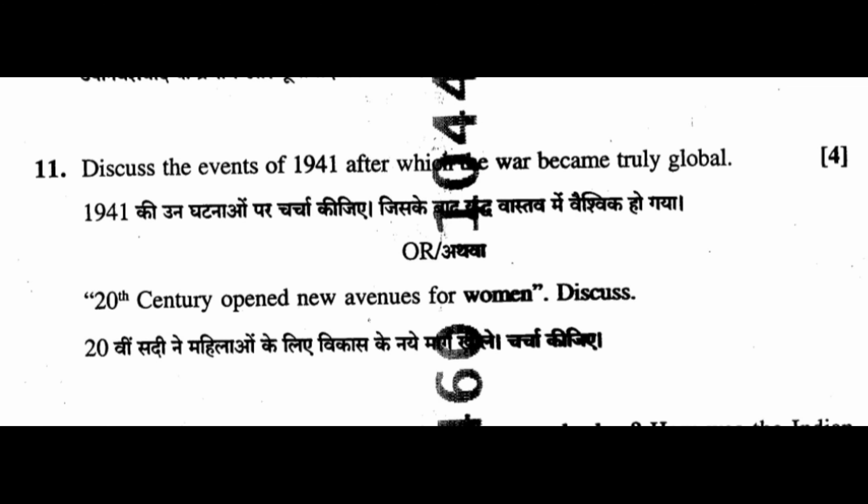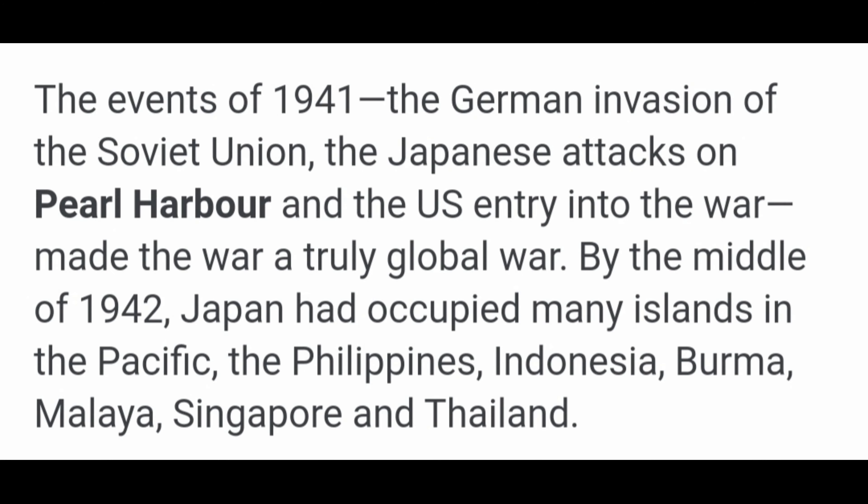Question 11: Discuss the events of 1941 after which the war became truly global. The events of 1941 — the German invasion of the Soviet Union, the Japanese attacks on Pearl Harbor, and the US entry into the war — made the war a truly global war. By the middle of 1942, Japan had occupied many islands in the Pacific, the Philippines, Indonesia, Burma, Malaya, Singapore, and Thailand.